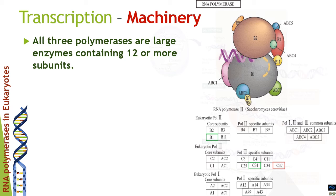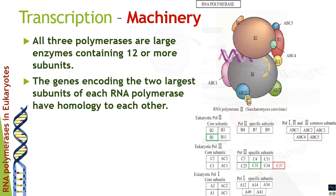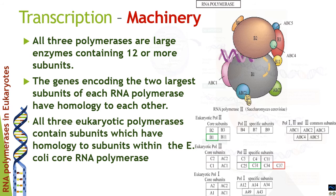All three eukaryotic RNA polymerases are large molecular assemblies containing more than 12 subunits. The genes coding for the largest subunits of each polymerase share homology with each other, and all three eukaryotic polymerases contain subunits that are also homologous to the E. coli core RNA polymerase subunits.